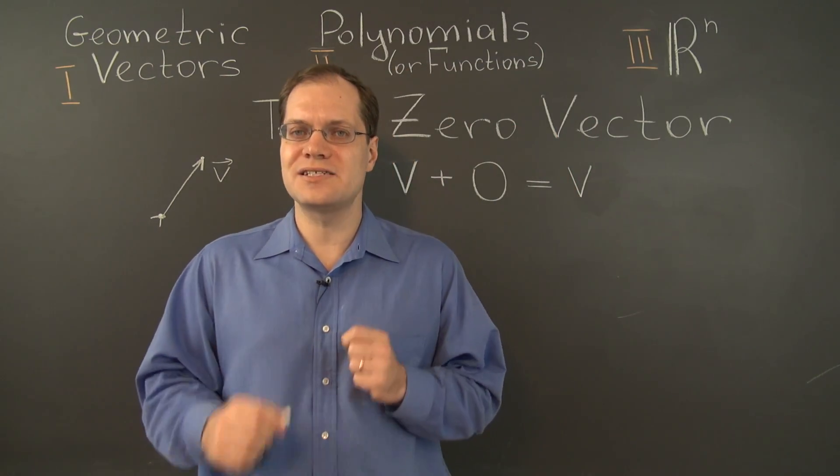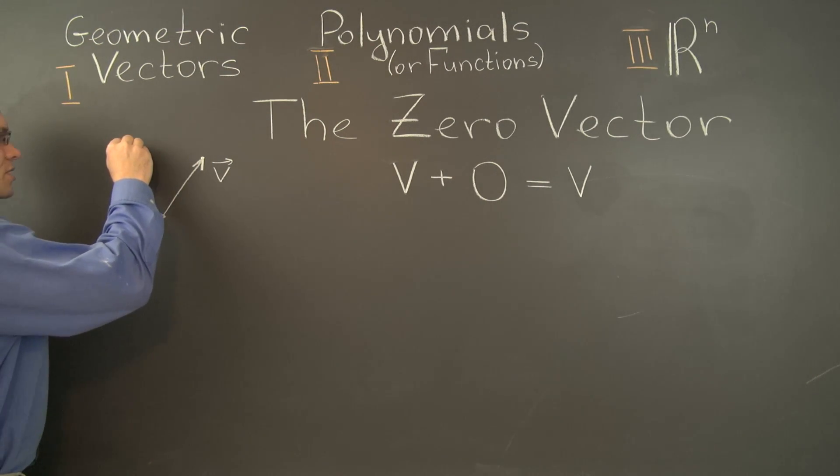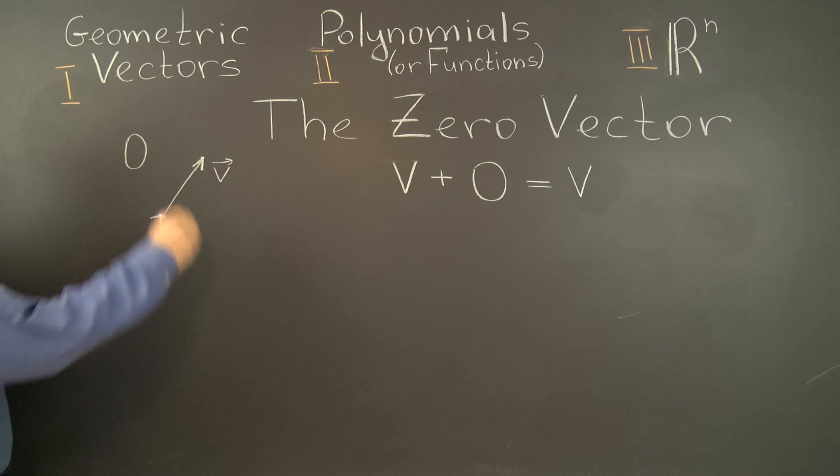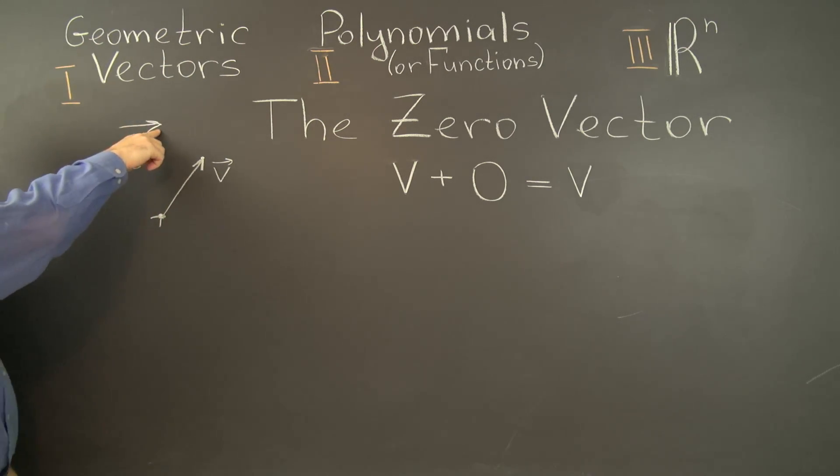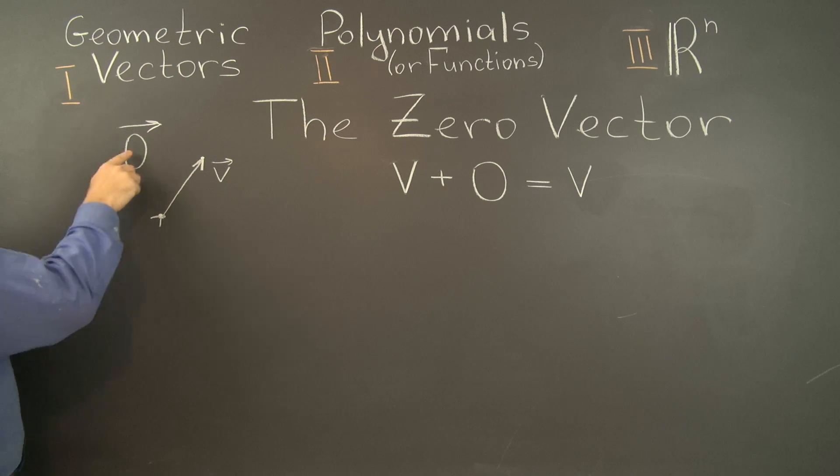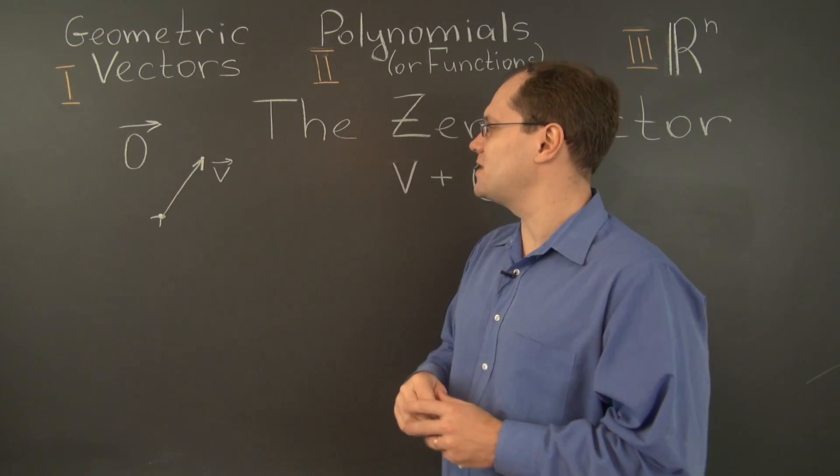In the case of geometric vectors, the zero vector actually has a special notation. Notation for the zero vector is important, and it's actually one of the weaknesses of this object. For geometric vectors, we have an opportunity to put an arrow above the zero. So this is the symbol that denotes the zero vector. And we're done talking about the zero vector in the space of geometric vectors.